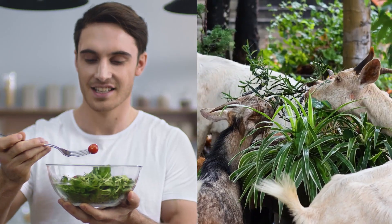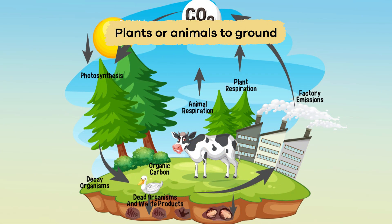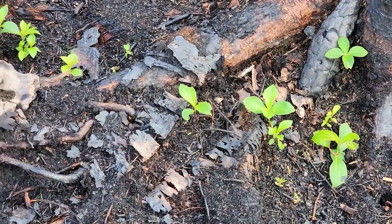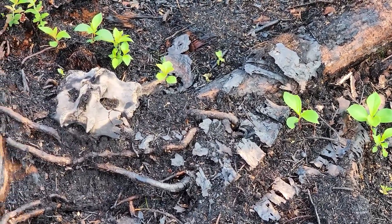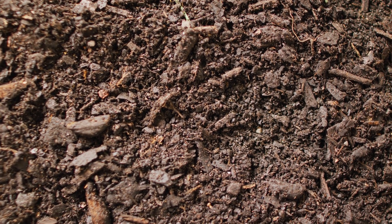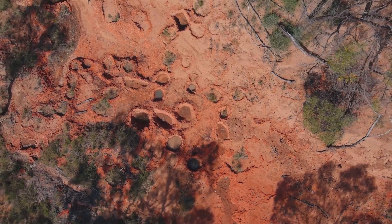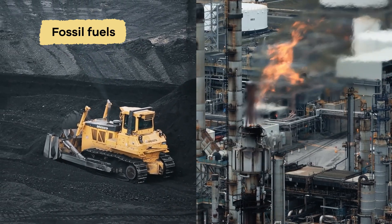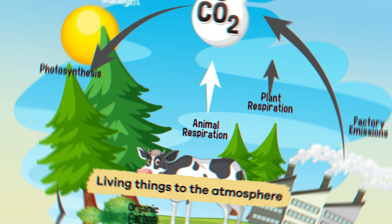As the plants break down carbon dioxide, they release oxygen. Plants to animals: humans and other animals eat plants, transferring the carbon from the plants into the animals. Plants or animals to ground: when a plant or an animal dies, their remains decompose, which means that the leftover carbon is absorbed into the soil.